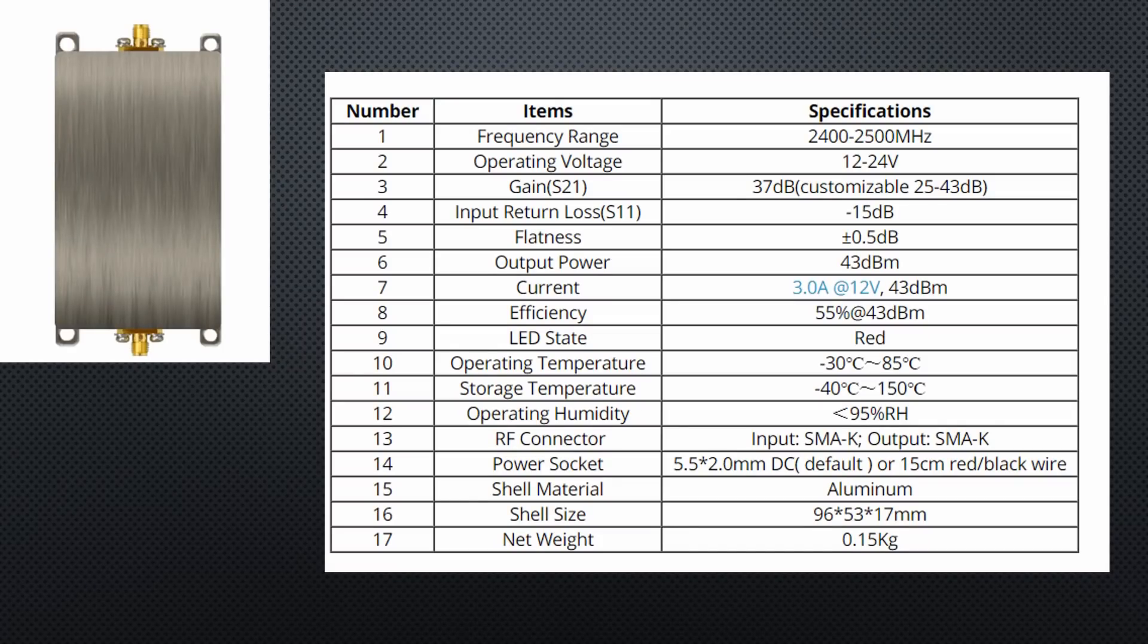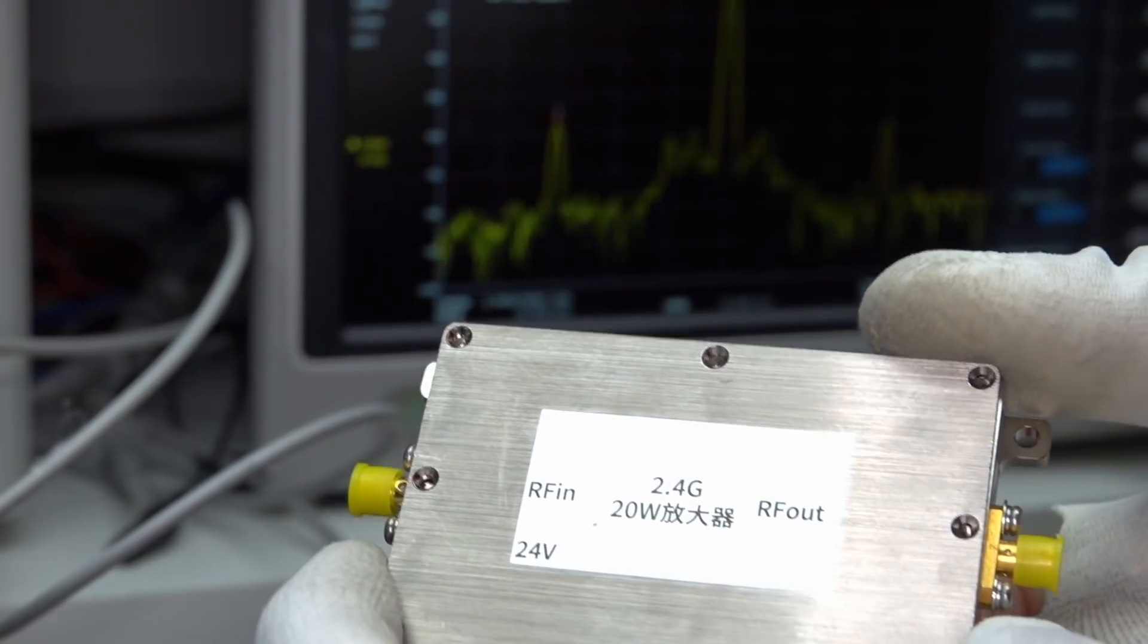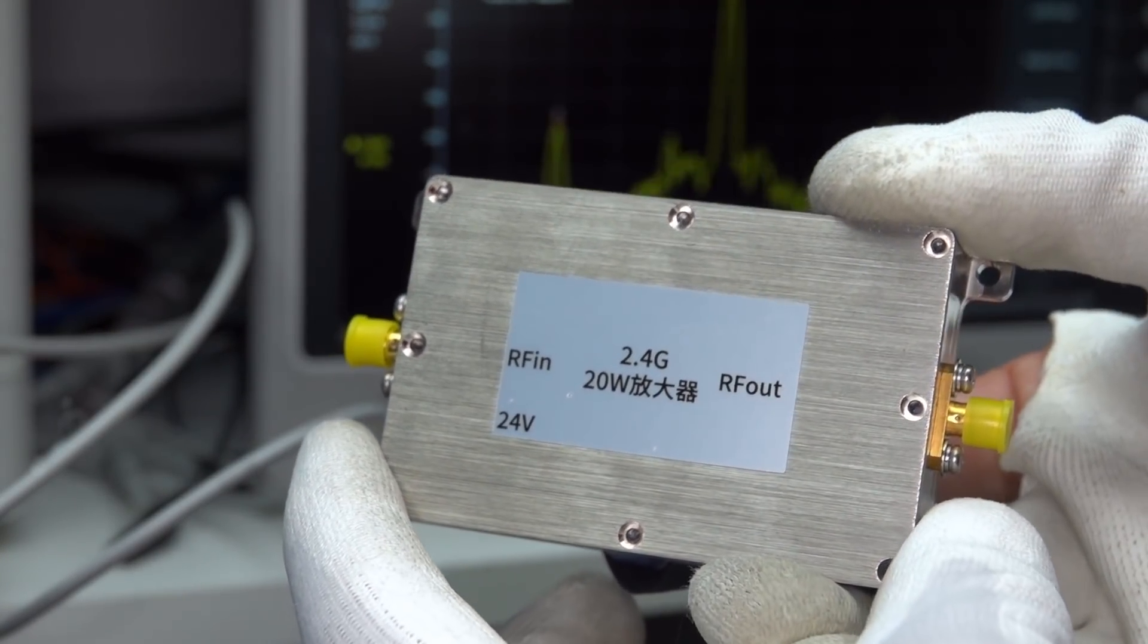I mentioned that I got a 20 watt amplifier as the last step before the antenna. According its datasheet, its gain is 37 dB. Its price is more than $200, which is a lot for AliExpress. So I assume you want to see what's inside?